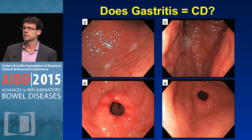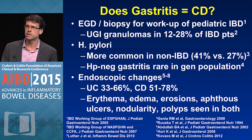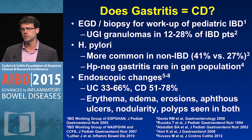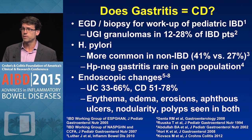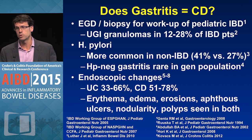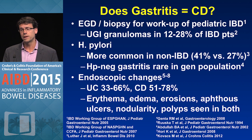Now we're going to move outside of the colon to other parts of the GI tract. Does having gastritis mean that you also have Crohn's disease? The European and North American pediatric GI societies recommend an upper endoscopy with biopsy as part of the routine workup of any patient suspected of having IBD — because you can find upper GI granulomas in up to a quarter of patients with IBD, thus making the diagnosis of Crohn's disease. No discussion of gastritis can occur without discussing H. pylori, which, in meta-analysis, is less common in IBD patients than in people without IBD.